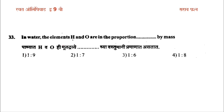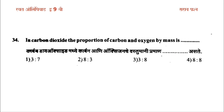In water, the elements hydrogen and oxygen are in the proportion blank by mass. Options include 1:9, 1:7, 1:1, 1:8. The answer is 1:8 — in water, hydrogen and oxygen are present in the proportion 1:8 by mass.